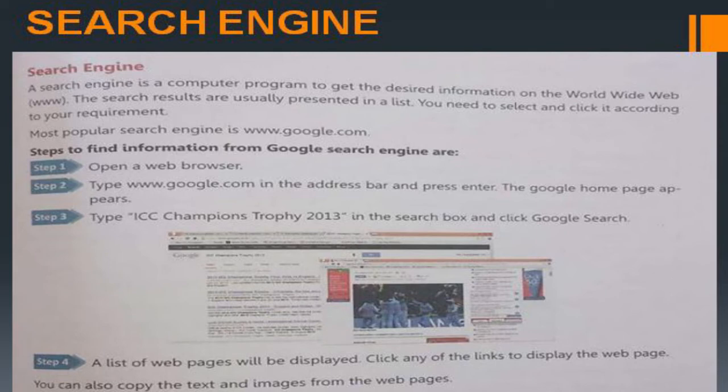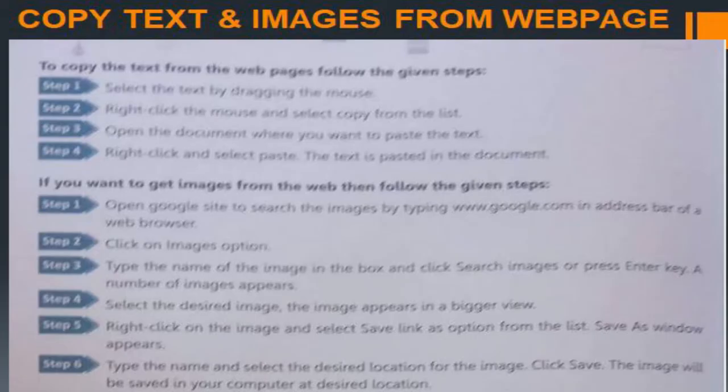Steps to find information using Google: open a web browser such as Google Chrome, Mozilla Firefox, or Internet Explorer. Type www.google.com in the address bar and press Enter. The Google homepage appears. Type your search query — for example, 'ICC Champions Trophy 2013' — in the search box and click Google Search. A list of web pages will be displayed; click any link to open it.